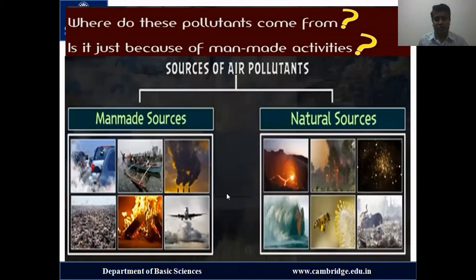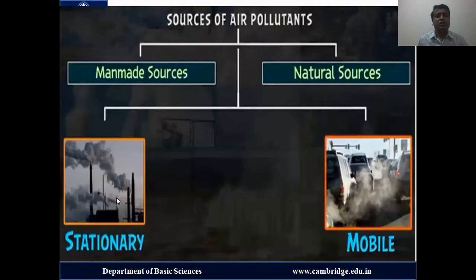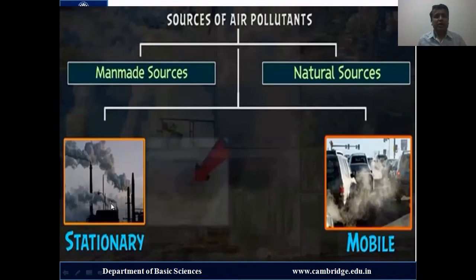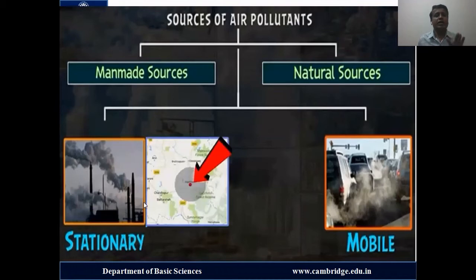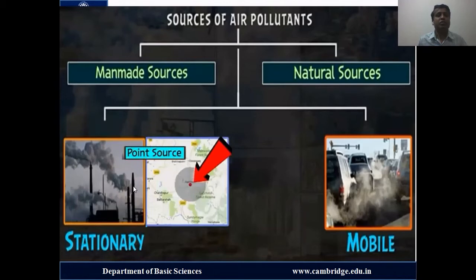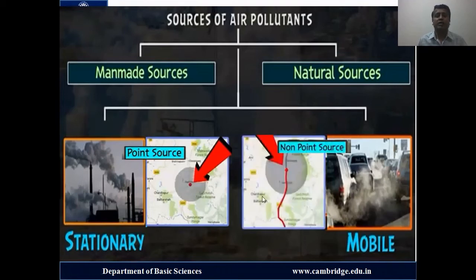These sources of air pollutants can also be viewed from another perspective. Certain sources are located at only one place and keep emitting air pollutants — these are called stationary sources. For example, an industry cannot move; once installed, it keeps emitting pollutants during its manufacturing process, so it is called a point source. The other type is a mobile source — vehicular movement — which keeps moving and is not stationary, so it is called a non-point source.